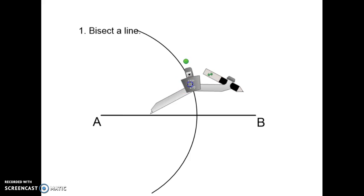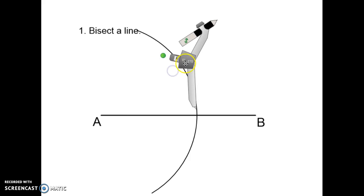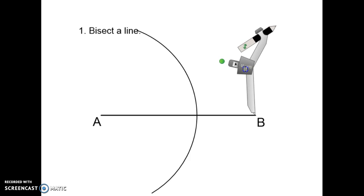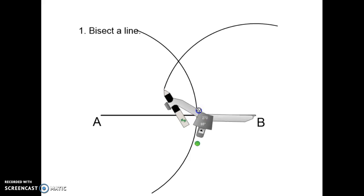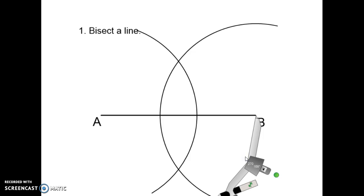Take your compass to the other end of the line. It's very important that you keep the compass opening exactly the same as it was for the first arc that you drew. Then draw an intersecting arc. That's why the compass needed to be opened beyond halfway — to make sure that these two arcs crossed over.